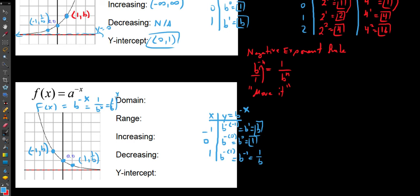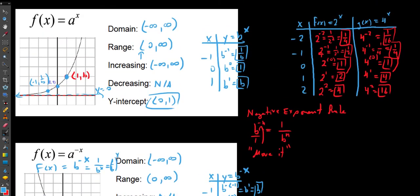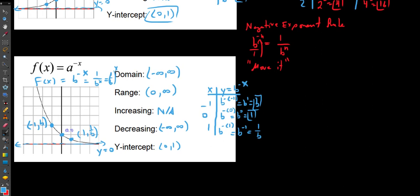For the decay function, the domain is also negative to positive infinity — any exponential function always has this domain. The range is still 0 to infinity, as this graph also approaches but never reaches a height of 0. This graph is always decreasing from left to right, and the y-intercept is still (0, 1). To distinguish: a positive exponent gives exponential growth — values move further from the x-axis going left to right. A negative exponent gives exponential decay — values get closer and closer to the x-axis.